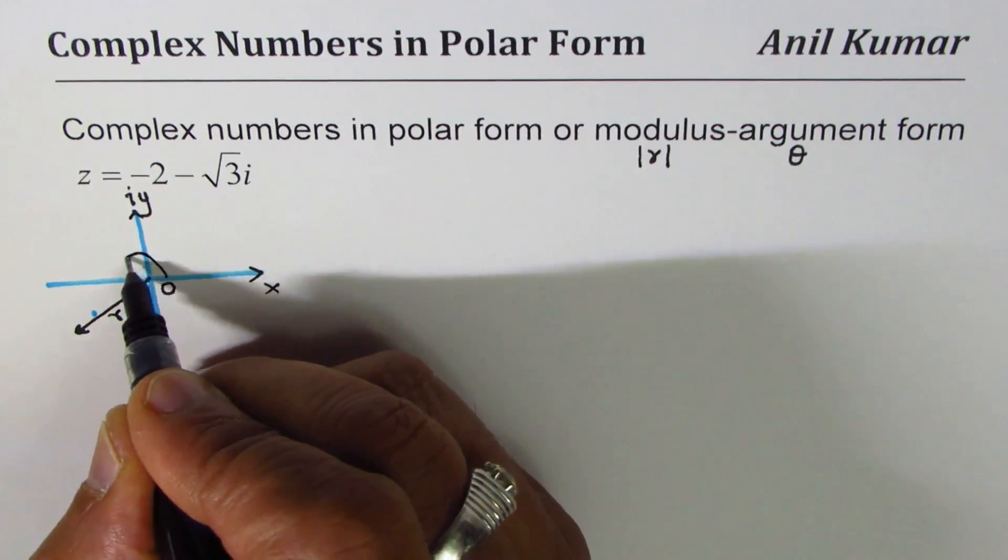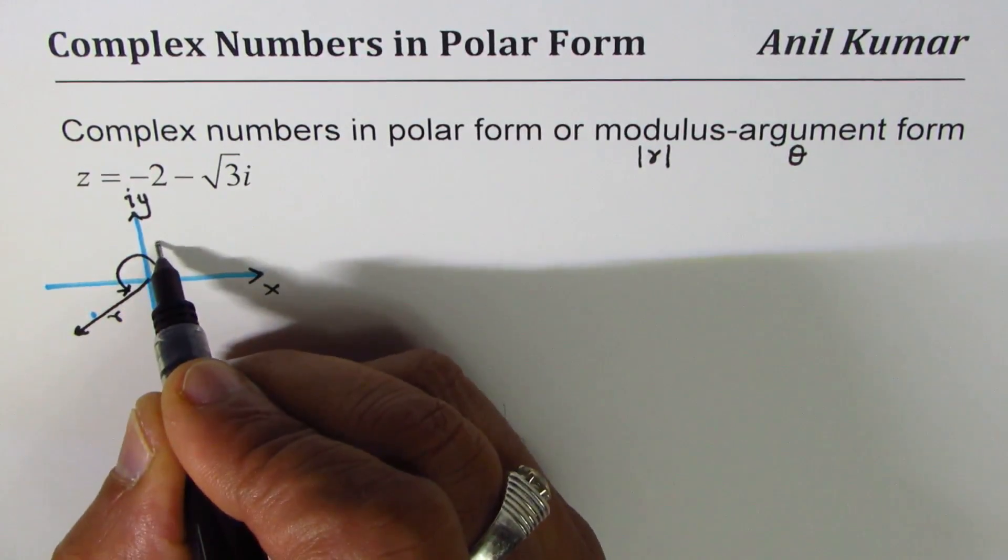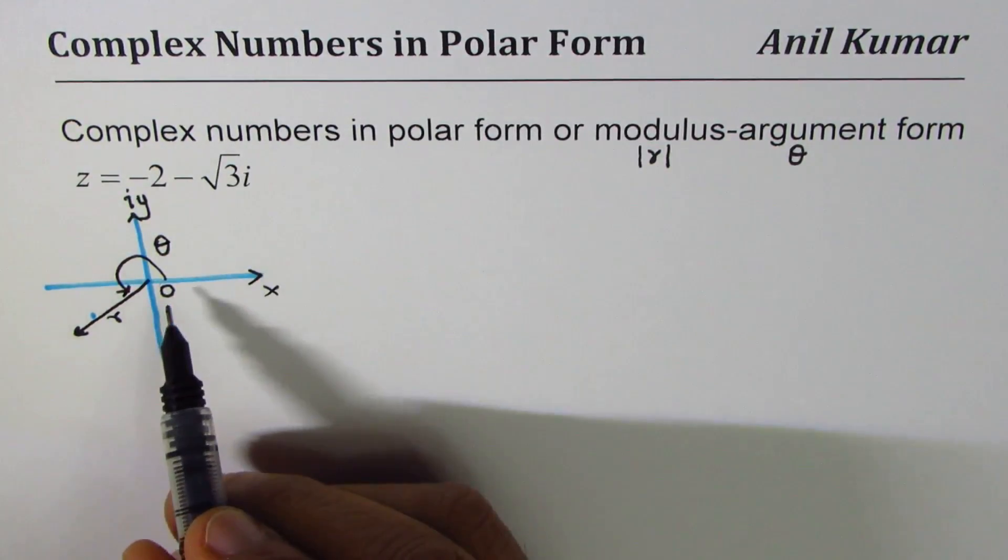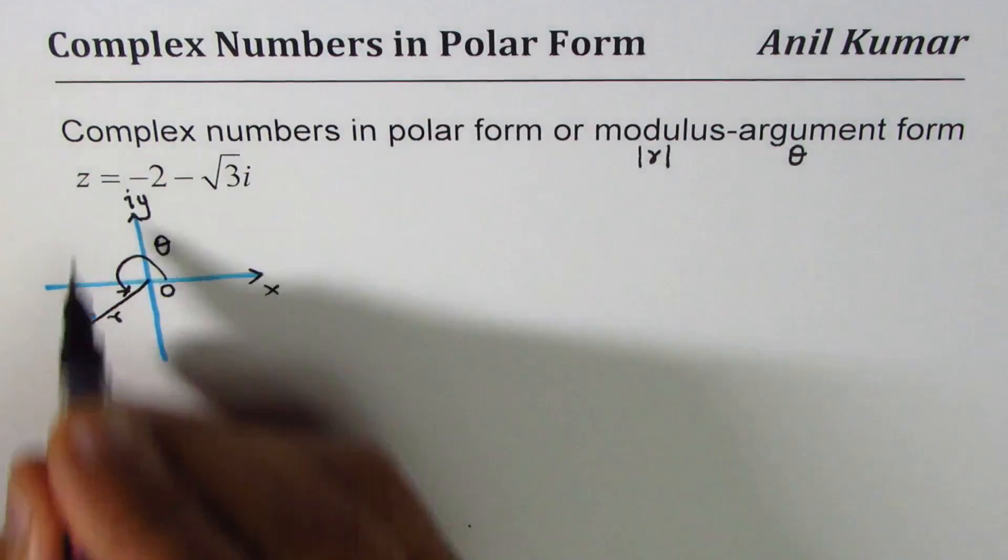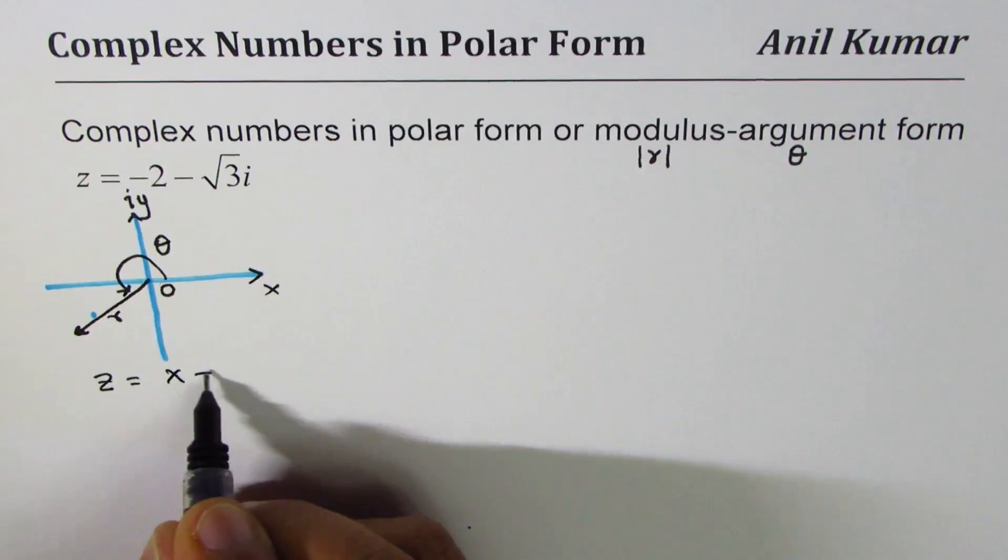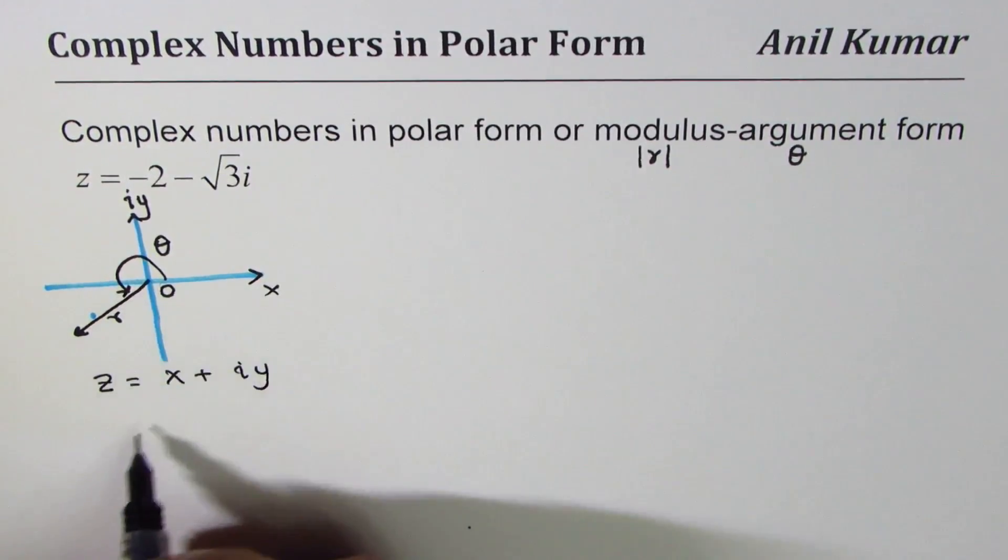Some students work in degrees, both is okay. So r is this length and θ is this angle. Let's take it positive for the time being.